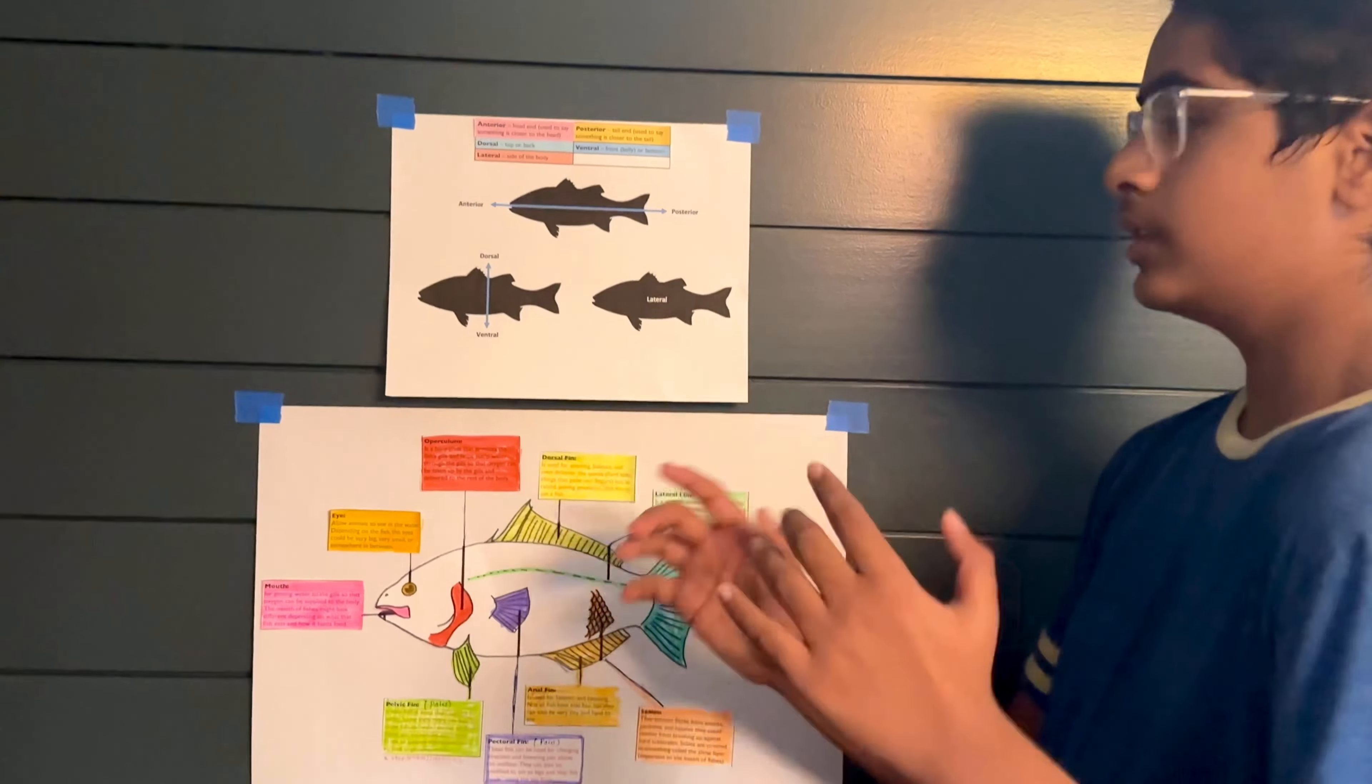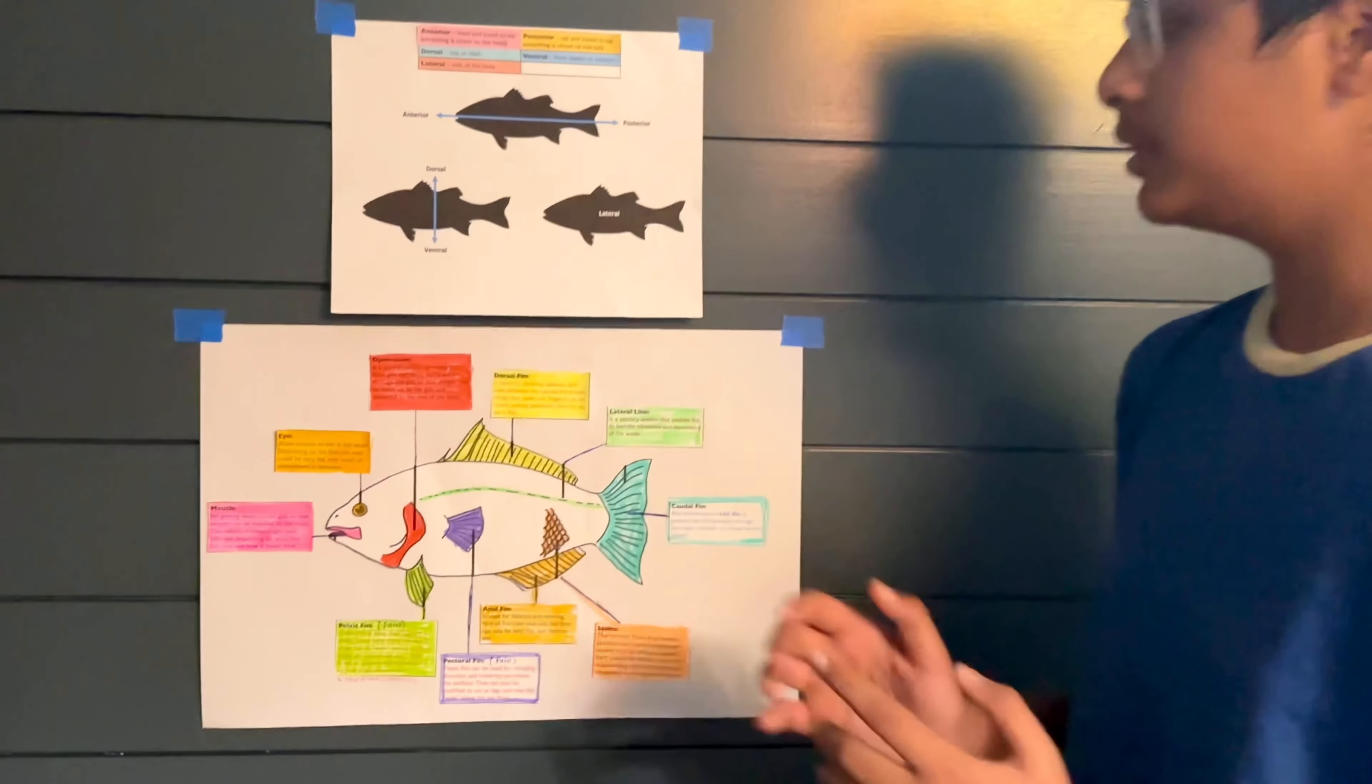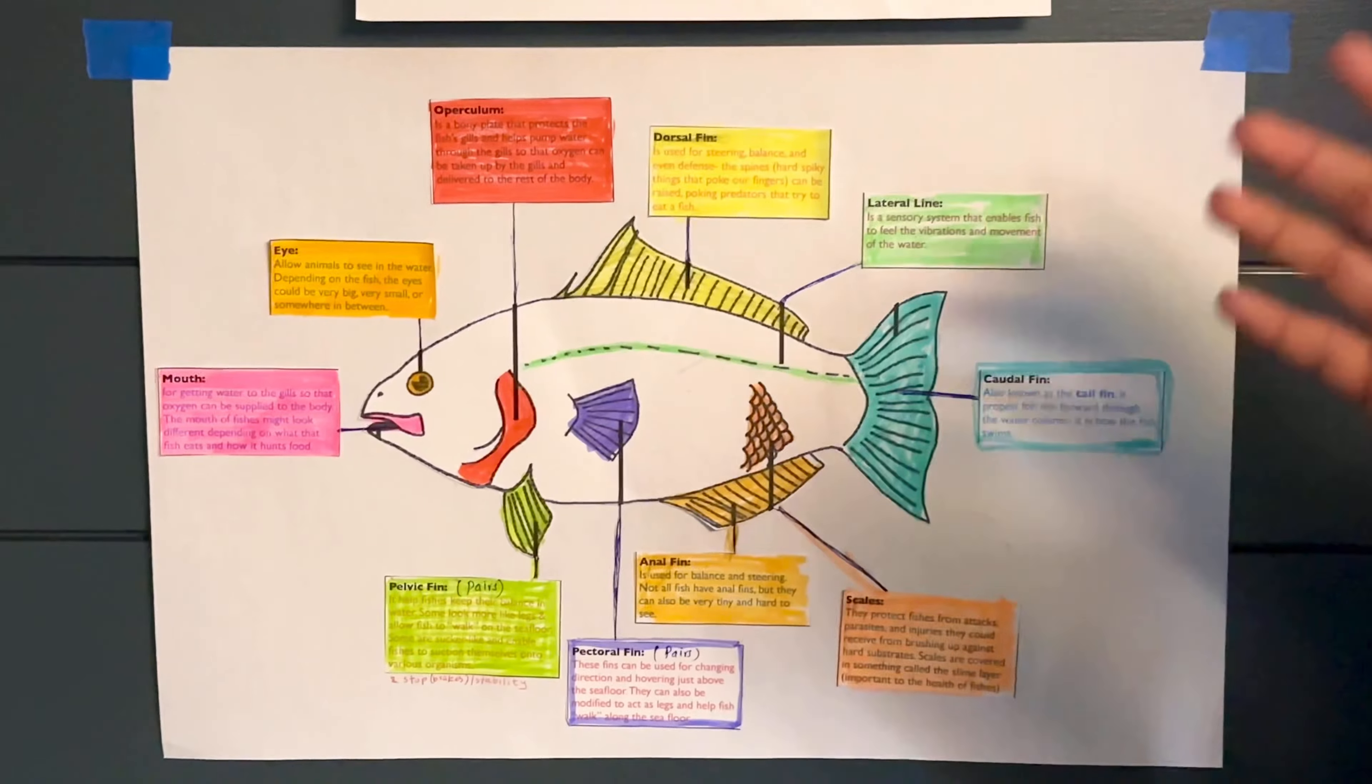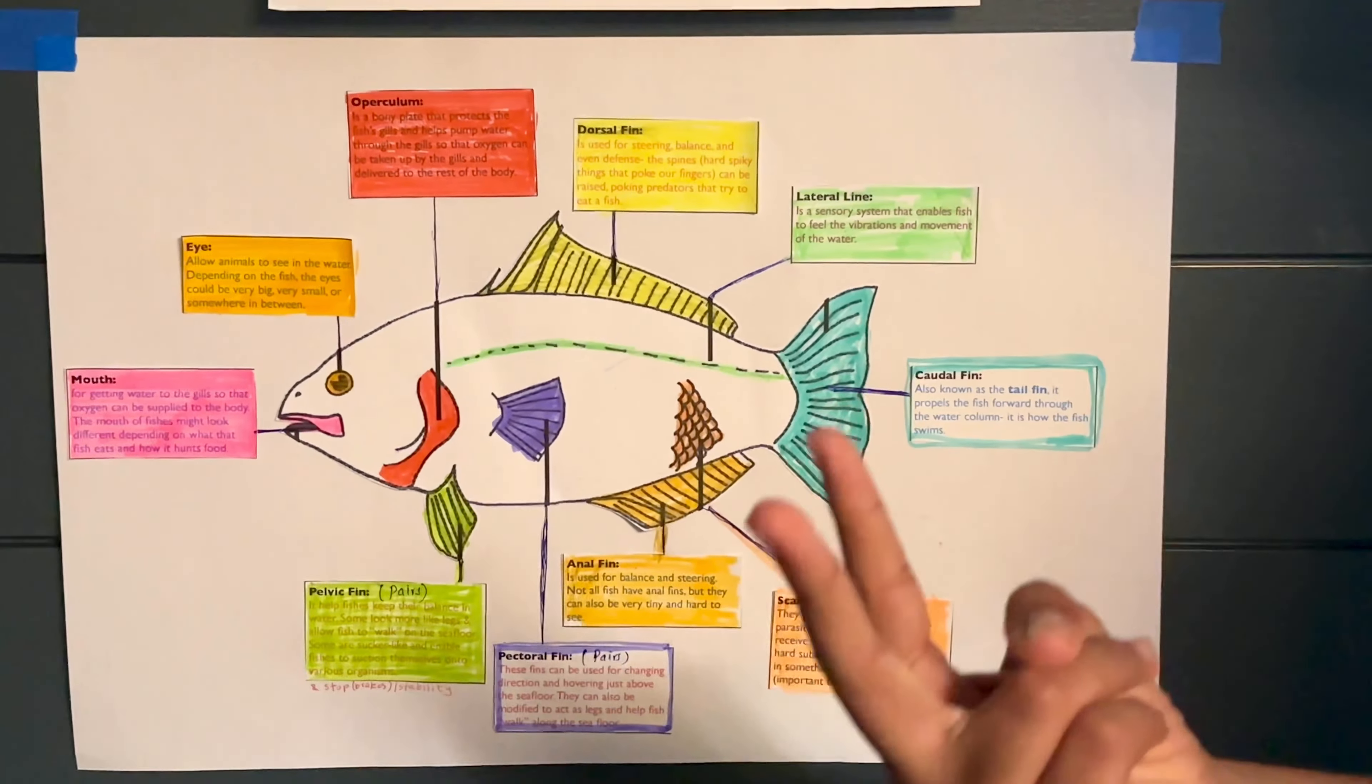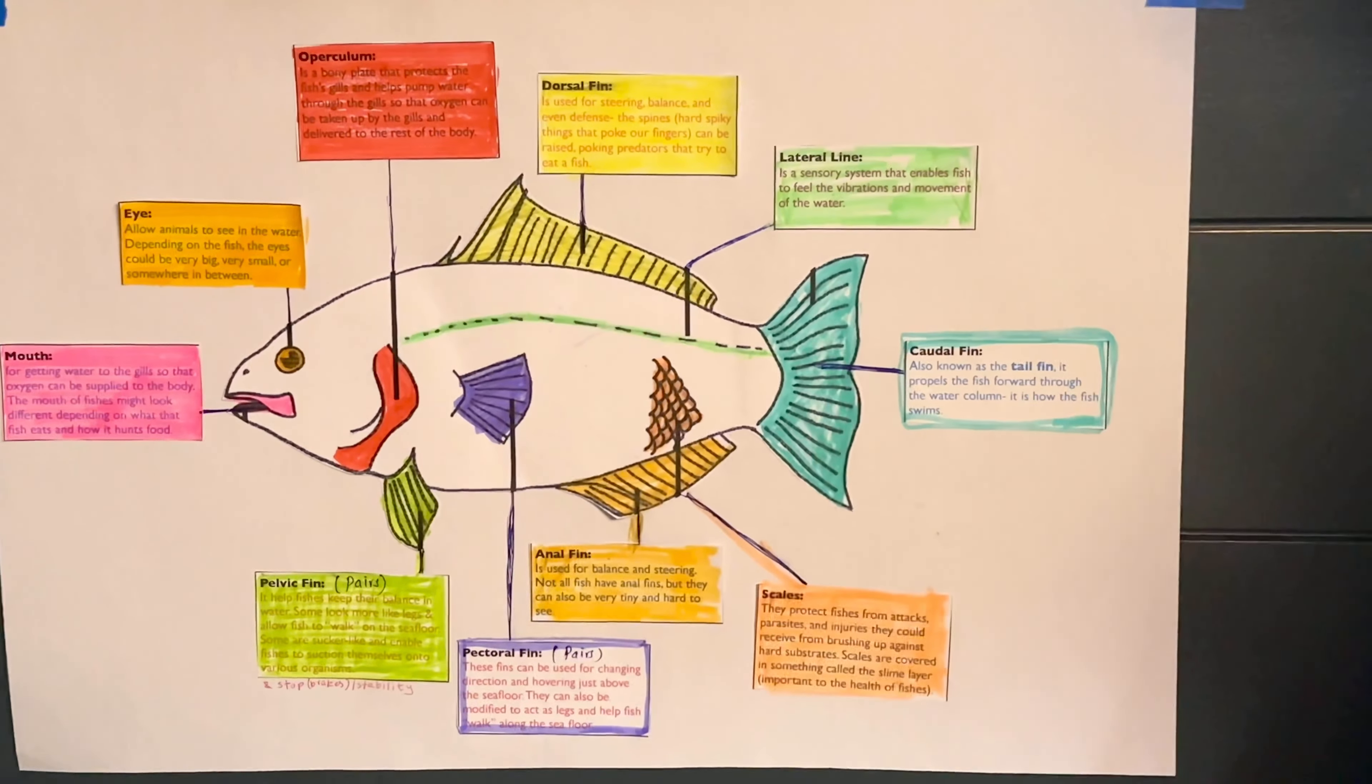Now that we have gotten those simple things out of the way, we're now going to move on to the anatomy. First, let's start with the fins. The fins of a fish, there's two different pairs of fins and there's a bunch of other functions of the fish that are important for its survival.